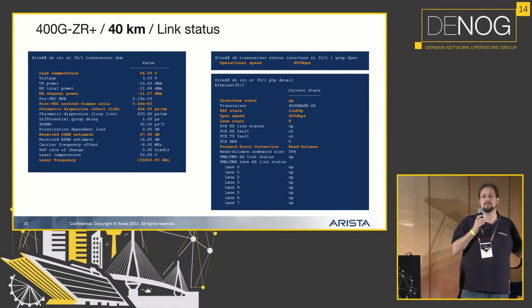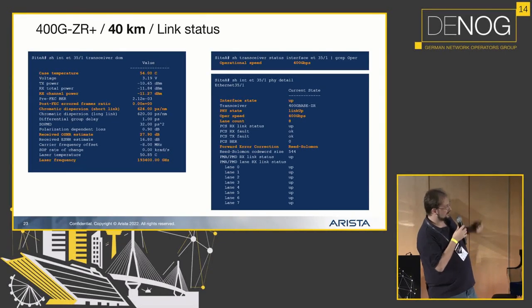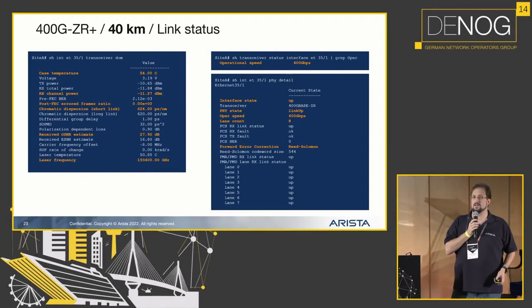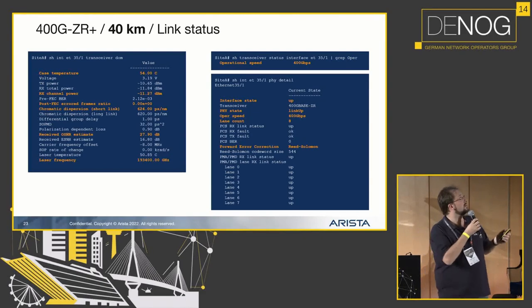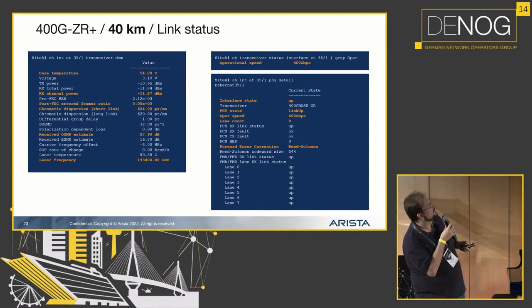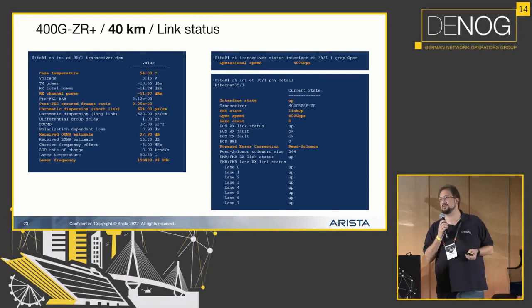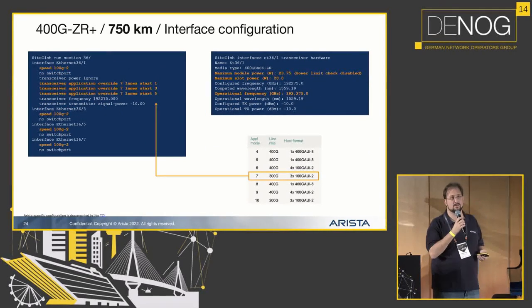The link came up. Temperature was again around 55 degrees. We see the channel power, the total power the optic receives, and the estimated OSNR — all within specifications. We can see we're operating in 400G mode, 400G is up with eight lanes, and we have Reed-Solomon as FEC enabled. Looks all good — we could ping across. 40 kilometers is fairly easy for a ZR Plus optic.